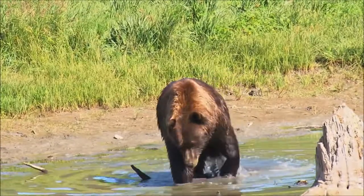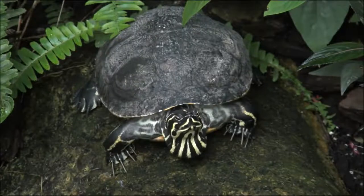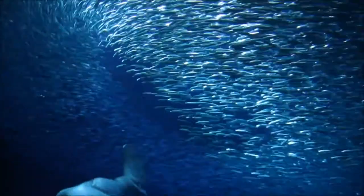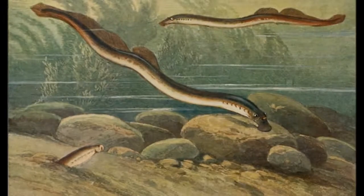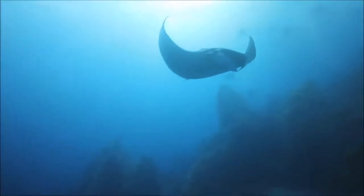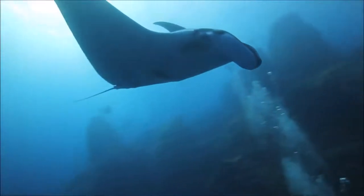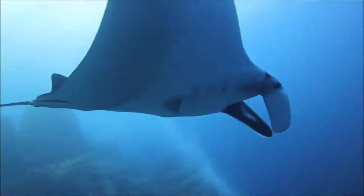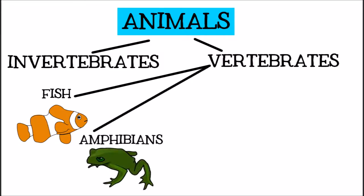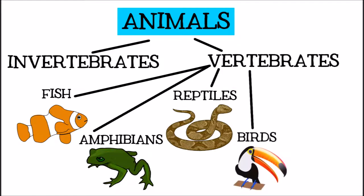Vertebrates make up less than 5% of all animal species on Earth, but if I asked you to think of an animal, you would probably choose a vertebrate. Vertebrates are divided into different classes, or groups. Several of these classes are specific types of fish — for example, jawless fish like lampreys and hagfish, and cartilaginous fish like sharks and rays. For simplicity's sake, these other classes are usually lumped together with bony fish and just called fish. The four remaining classes of vertebrates will all be very familiar: amphibians, reptiles, birds, and mammals.